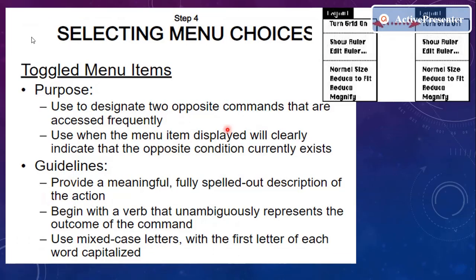Toggle menu items represent two opposite commands that are accessed frequently. For example, in Microsoft Word, selecting 'Grid On' displays grid lines on screen and automatically changes the menu item to 'Grid Off'. Selecting 'Grid Off' hides the grid and toggles the menu item back to 'Grid On'. This toggling of menu items is used to designate two opposite commands — one to show the grid and one to hide it.